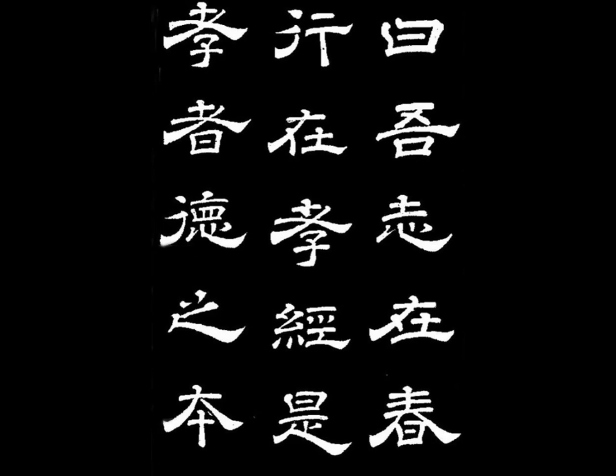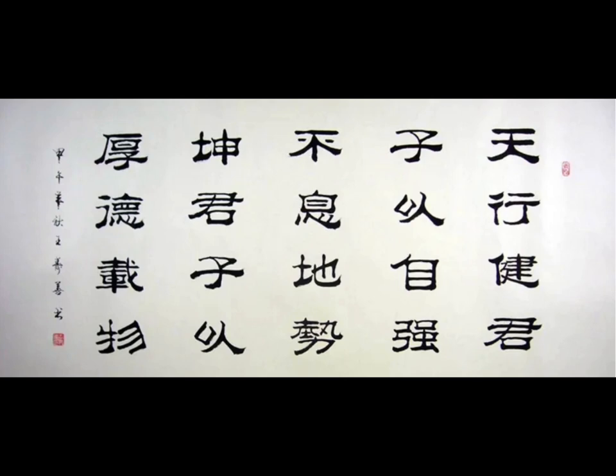Next is the Li script, also known as Han Li, which is a dignified script in Chinese characters. It is written in a slightly wide and flat shape, with long horizontal and short vertical strokes and is rectangular in shape. The script originated in the Qin dynasty and was compiled by Cheng Miao. It reached its peak in the Eastern Han dynasty and has had a significant impact on later calligraphy.